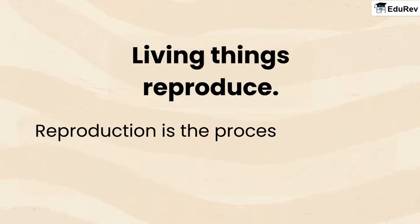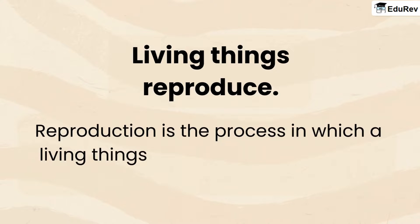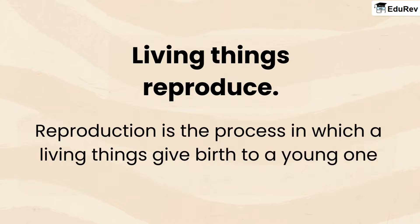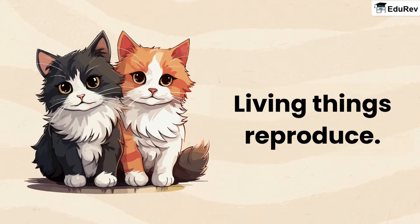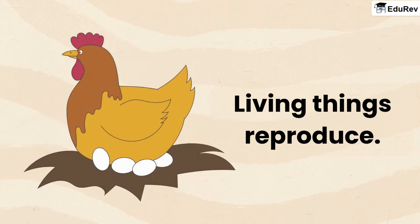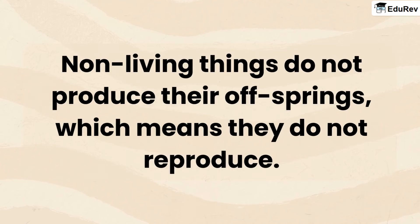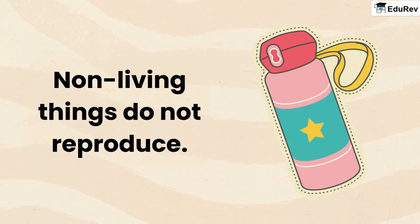Living things reproduce. Reproduction is the process in which a living thing gives birth to a young one of its own kind. A woman gives birth to a baby. A cat gives birth to a kitten. Birds lay eggs, from which young ones come out and slowly grow into adults. Non-living things do not produce their offspring, which means they do not reproduce. A bottle does not give birth to a new bottle.